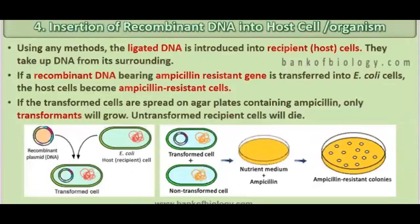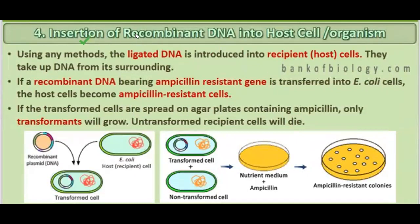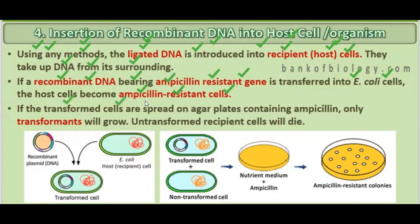Next is insertion of recombinant DNA into the host cell or organism. Using various methods, the ligated DNA is introduced into the recipient host cells so they can take up the DNA from their surroundings. If a recombinant DNA bearing an ampicillin-resistant gene is transferred into E. coli cells, the host cells become ampicillin-resistant. The transformed cells are spread on agar plates containing ampicillin — only transformants will grow, while untransformed recipient cells will die.